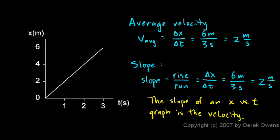And the more you think about that, the more it should make sense. If the object had moved a larger distance, this line would have been going up more steeply. And we would have had a larger average velocity and a larger slope. The slope of an x-t graph is the velocity. And that's true for any position versus time graph.